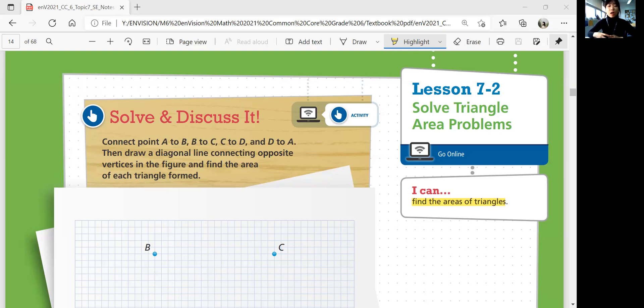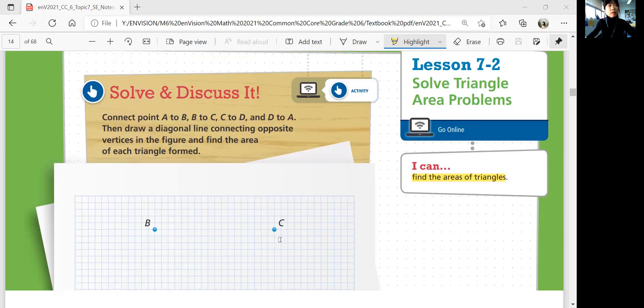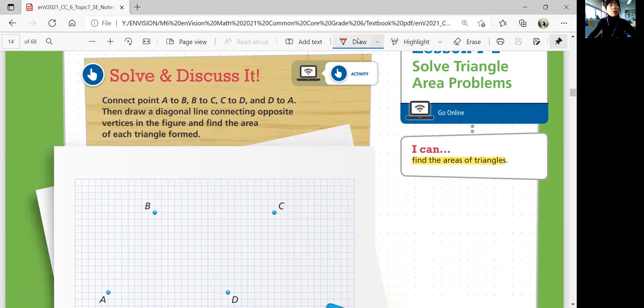Let's look at solve and discuss it. Connect point A to B, B to C, C to D, and D to A. Then draw a diagonal line connecting opposite vertices in the figure and find the area of each triangle they formed. So just like how we started last lesson, we're going to connect the points here and explore the areas. So that's point A and B. Okay, connect A and B, and then B to C.